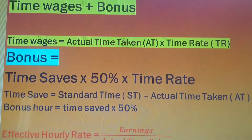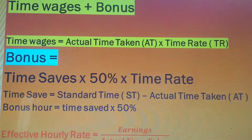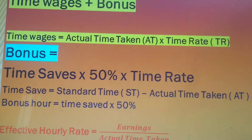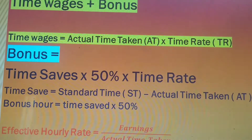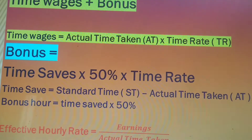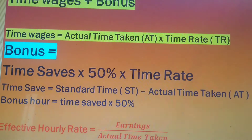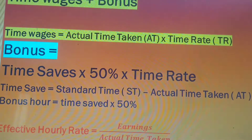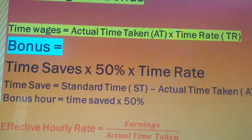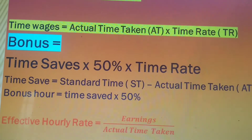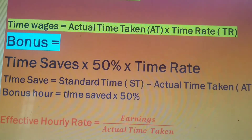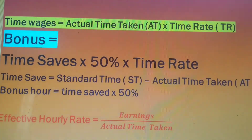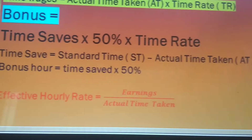The total formula for the Halsey Plan is: first calculate time wages, which is actual time taken (AT) multiplied by time rate (TR). To this, add bonus, which is 50% of time saved multiplied by the time rate. This is the complete formula for the Halsey Plan.